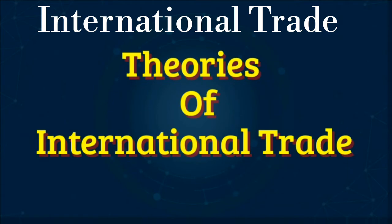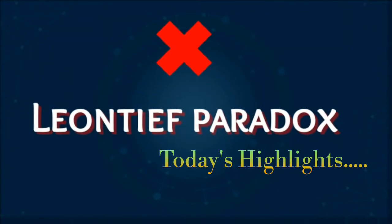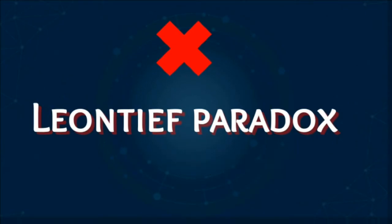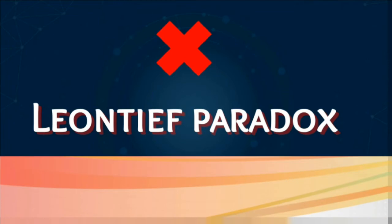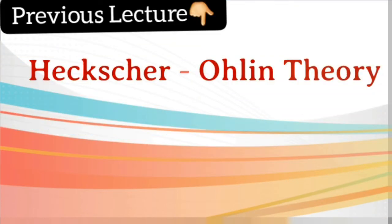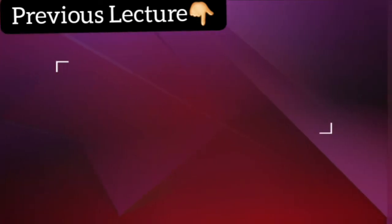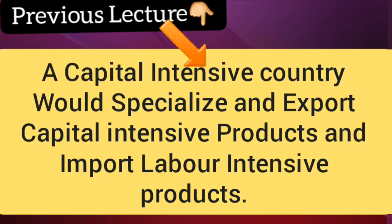We are working on the theories of international trade and today's topic is about the concept of Leontief Paradox. This concept is a continuation of our last lecture, the Heckscher-Ohlin theory. So before we move to the concept of Leontief Paradox, we have to revise some important points about the Heckscher-Ohlin theory.